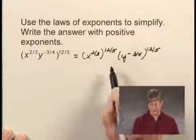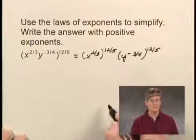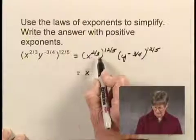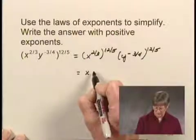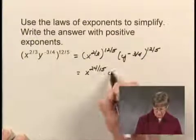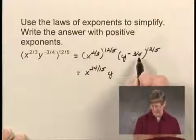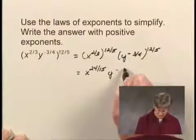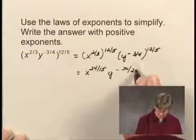Now we're going to use the law of exponents that says when you raise a power to a power, you multiply exponents. So I'm multiplying 2/3 and 12/5 to get the new exponent on x, which is 24/15. And for y, I'm going to multiply negative 3/4 and 12/5, which gives negative 36/20.